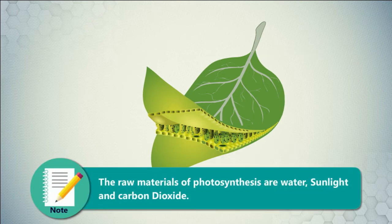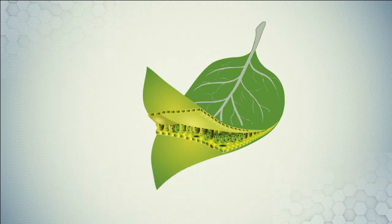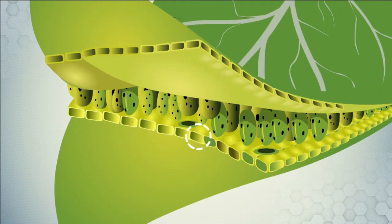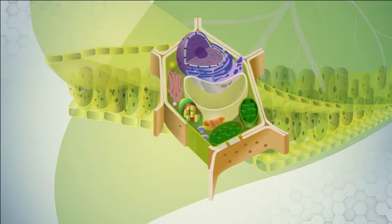The raw materials of photosynthesis are water, sunlight, and carbon dioxide. After that, carbon dioxide and water come into the main cell.